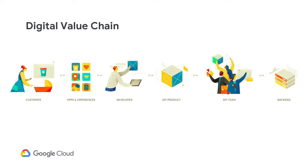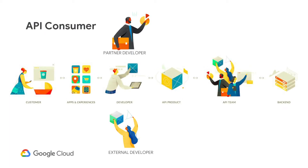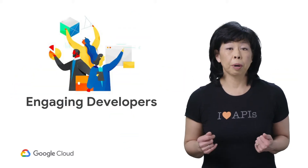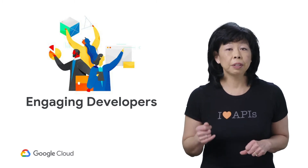Let's take a closer look at the developer. The application developer is also known as the API consumer. The developer community is very diverse. We often hear from companies that believe a developer community is restricted only to internal developers. However, the developer community includes internal developers, partner developers, and developers external to the company. Successful communities include all types of developers and even treat internal and external developers the same. Companies with a focused API product strategy will look outward to engage developers.